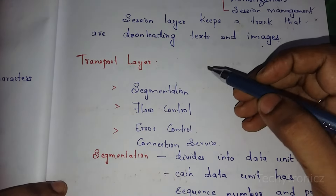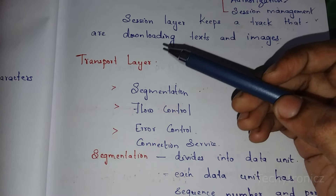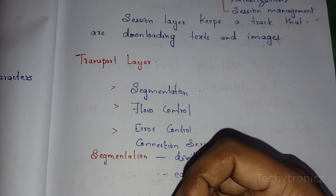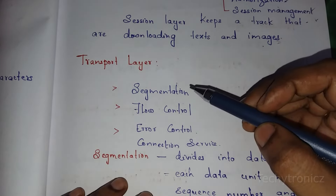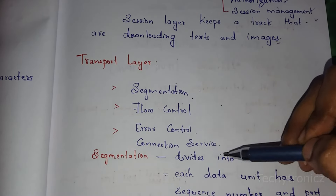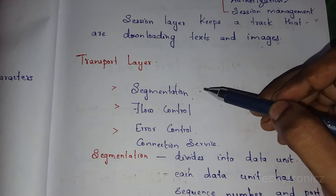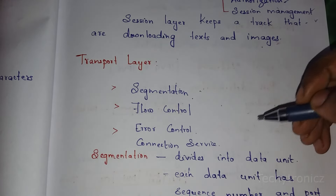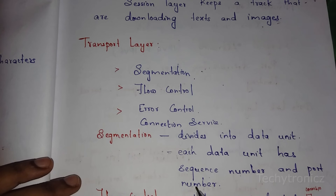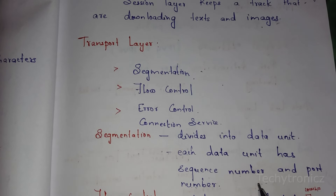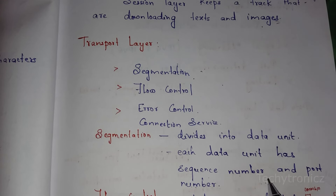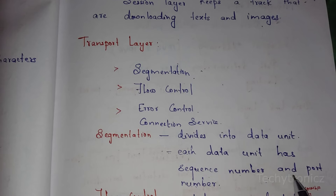The next layer is the transport layer. The data coming from the application layer is processed through presentation layer and session layer, and then in the transport layer it is divided into smaller pieces called segments. This dividing is called segmentation. Each segment gets a sequence number and port number assigned to it.